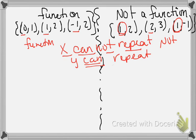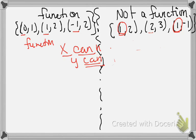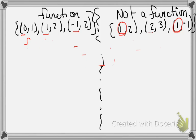That's how easy it is to identify a function when looking at ordered pairs — just check if x repeats. Also notice that y can repeat: you can see the y value repeating in the function example and it's still a function. It's only x that cannot repeat.